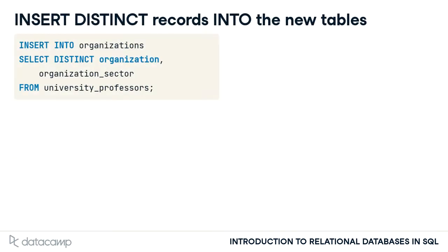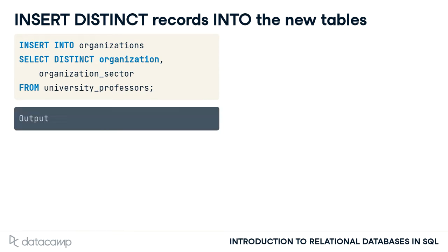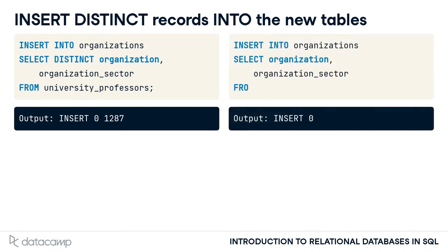In order to copy data from an existing table to a new one, you can use the INSERT INTO SELECT DISTINCT pattern. After INSERT INTO, you specify the name of the target table — organizations in this case. Then you select the columns that should be copied over from the source table — university professors in this case. You use the DISTINCT keyword to only copy over distinct organizations. As the output shows, only 1287 records are inserted into the organizations table. If you just used INSERT INTO SELECT without the DISTINCT keyword, duplicate records would be copied over as well.